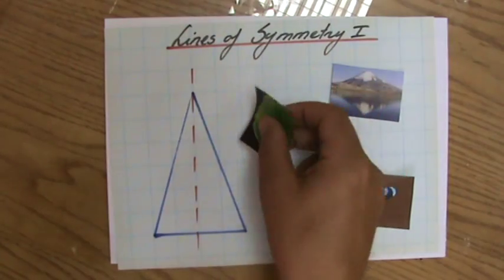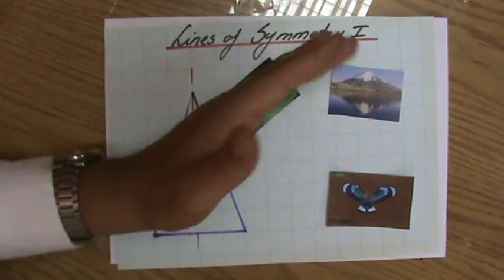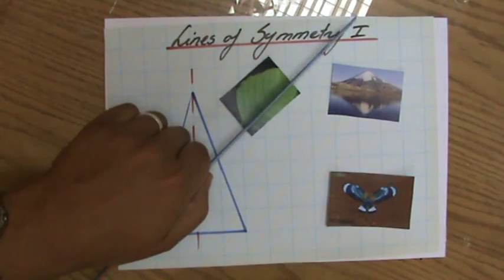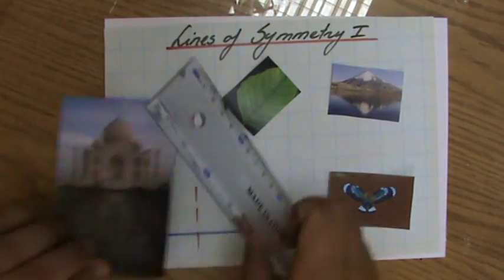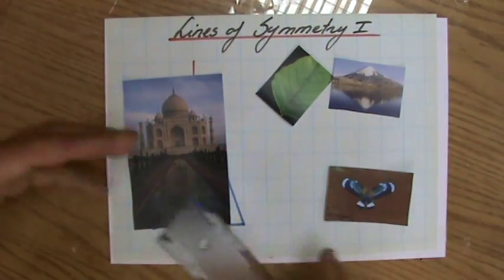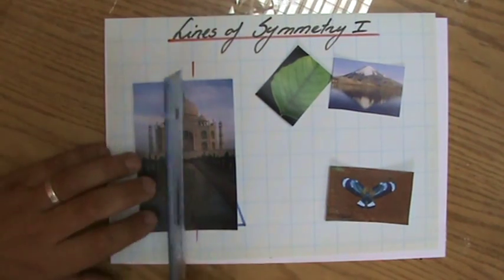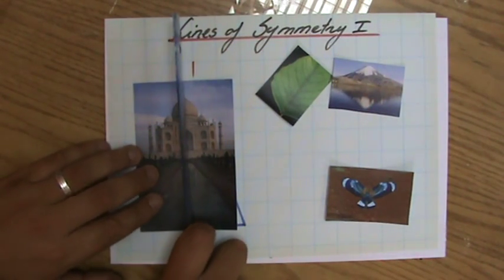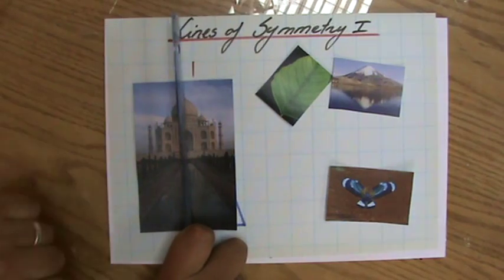I have here a picture of a leaf, and you see a beautiful line of symmetry there as well, going through the middle. And my final picture, especially for my friends in India, the Taj Mahal, beautiful symmetrical building. I've been there once. It's fantastic.